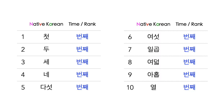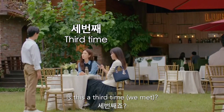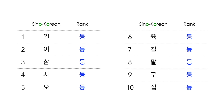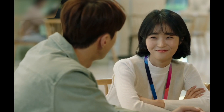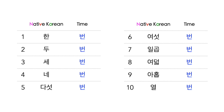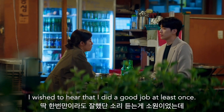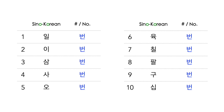Counter 번째 is used for rank or occurrence. 첫 번째 can mean first time or first place depending on context. 등 is another counter for rank, paired with Sino-Korean numbers: 일등 means first place in a ranking. 번 is another counter for occurrence: 한 번 means one time (cardinal), which is different from ordinal 첫 번째 meaning 'first time.' Counter 번 is also paired with Sino-Korean numbers to refer to a specific number — for example, your locker number can be 일 번, phone extension is 십오 번, ticket number is 칠 번, and 5th Avenue is 오 번가.